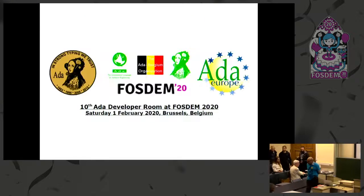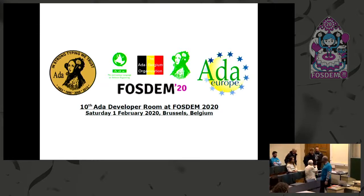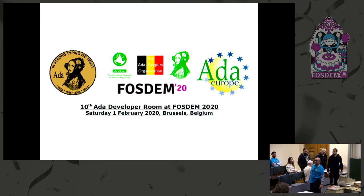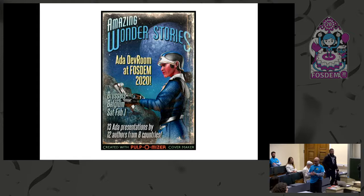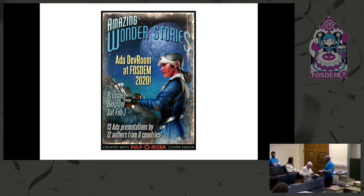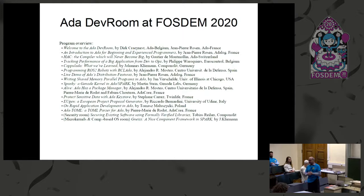Ada Europe also publishes a monthly journal called the Ada User Journal, which features technical papers, news, and so on about Ada. I have brought a number of spare copies — they are a bit old but still interesting. You are welcome to pick them up from the desk there; they are here for you.